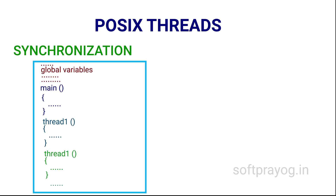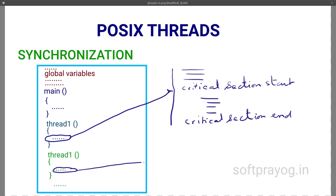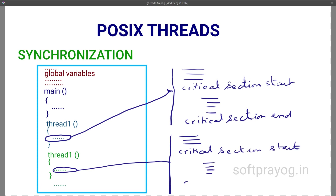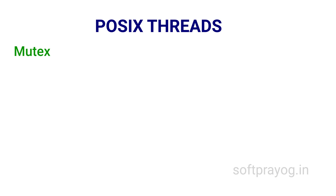Now we come to thread synchronization. Why synchronization? Threads are asynchronous — they progress concurrently, but they are not 100% independent. They need to work together for the purpose of the process. More importantly, threads share the global data of their process. So if a thread modifies data which some other thread is using in good faith, the results may be disastrous. That is why there are critical sections of programs where the variables used are guaranteed to be under the control of only one thread. Threads need to be synchronized so that only one thread works in the critical section at a time, while others must wait.